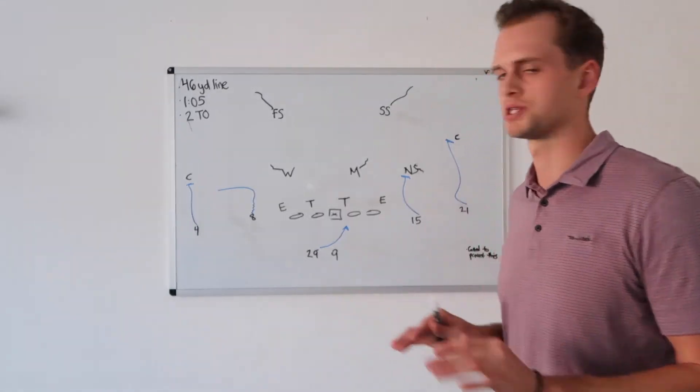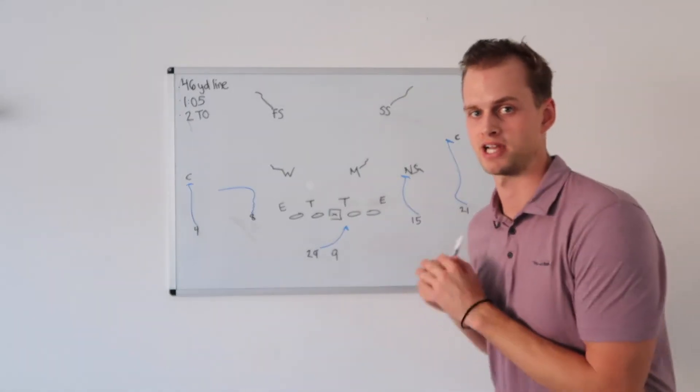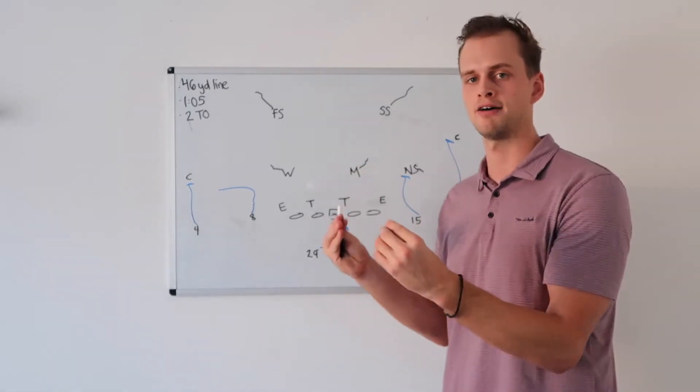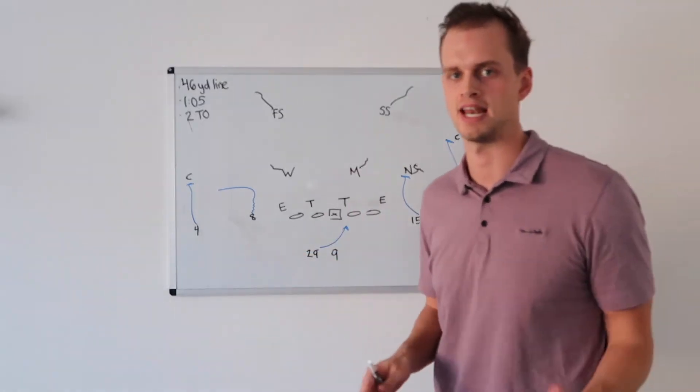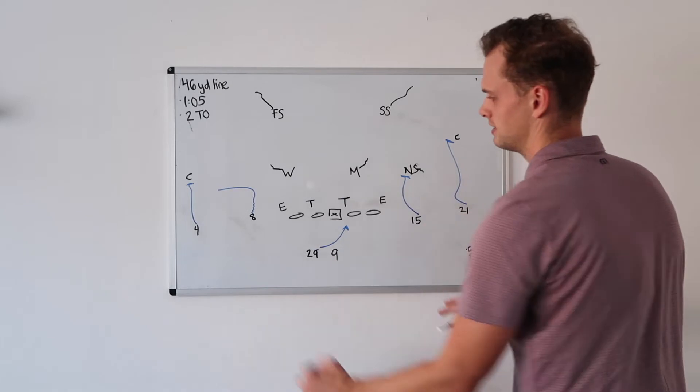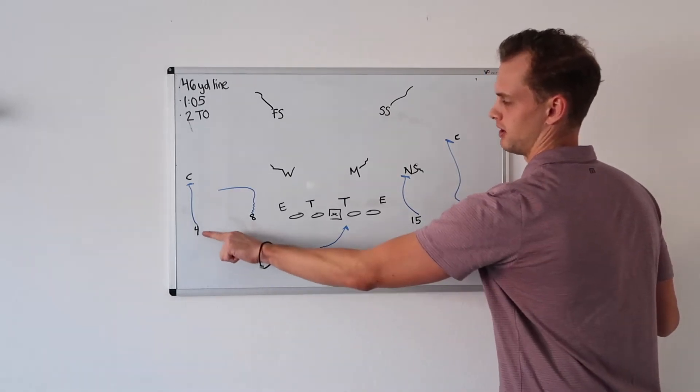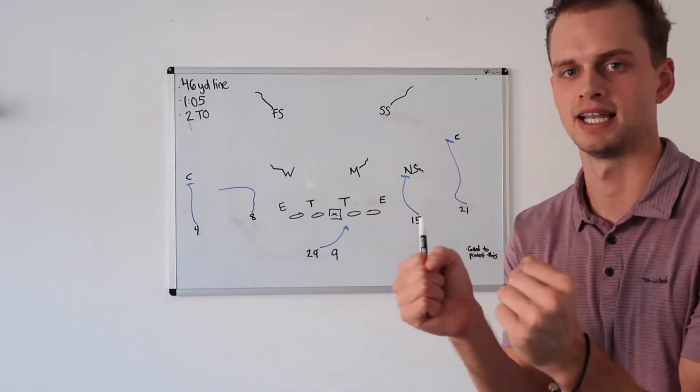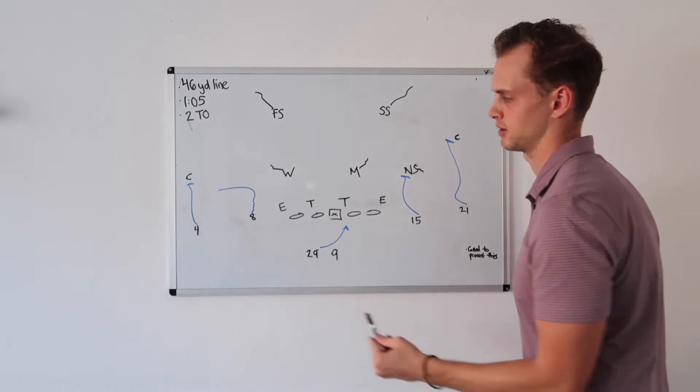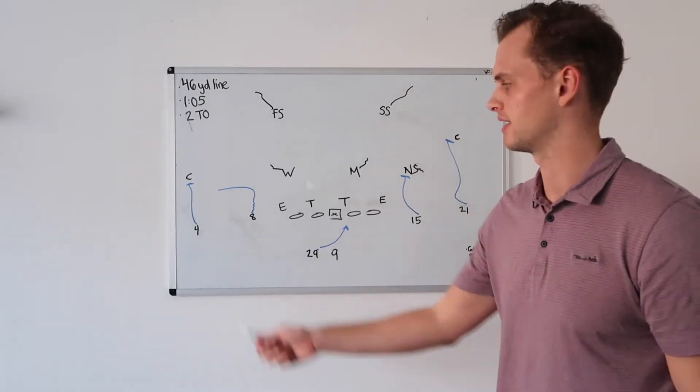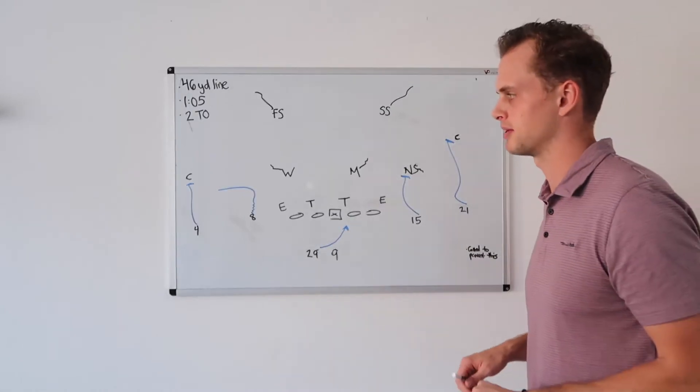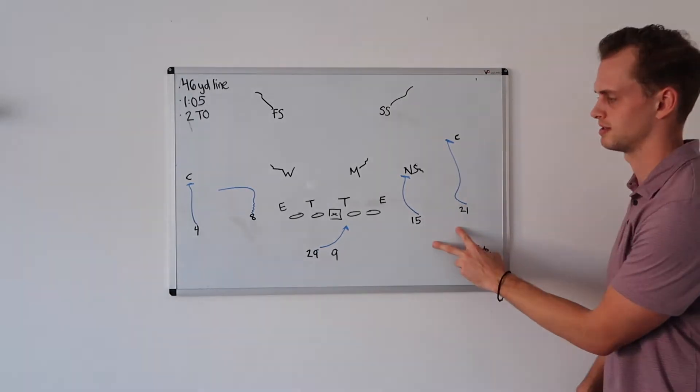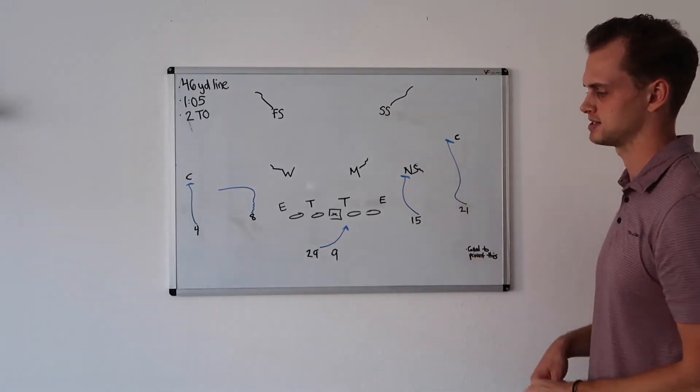USC elects to call a simple run play with an alert to the other side for Keaton Slovis. Some people call this an RPO. I was taught that this is not really a true run pass option. It's we are calling this run play, and if the picture is clean enough, you are alerted to throw this route. It's a two by two formation. You'll notice Amon Ra on the ball, Bru McCoy is now off the ball.